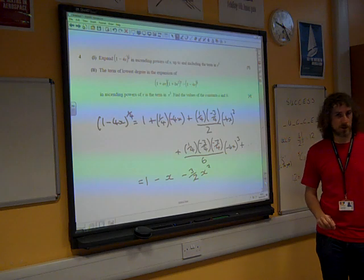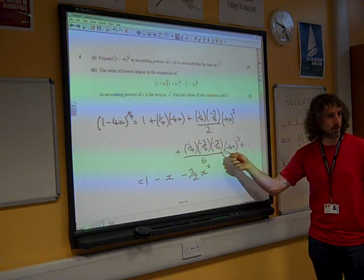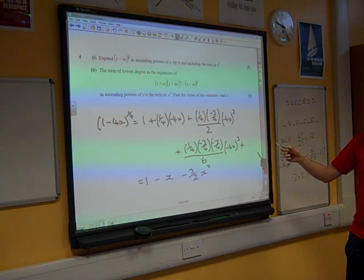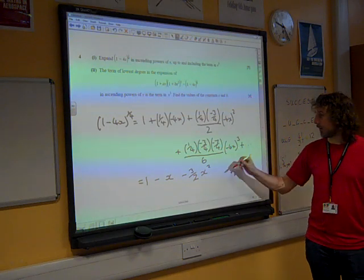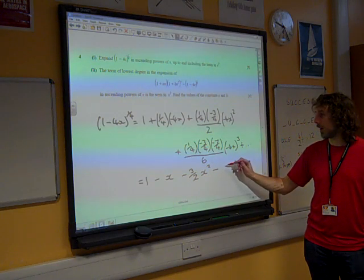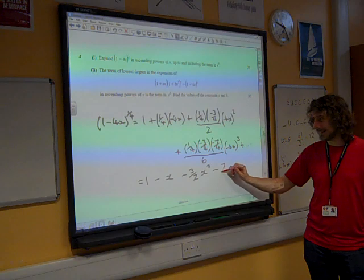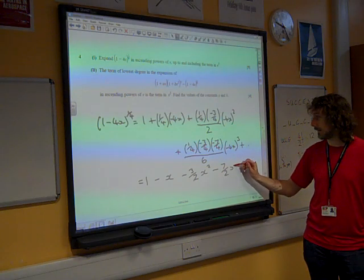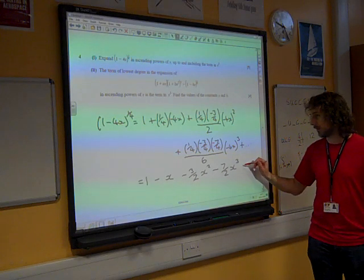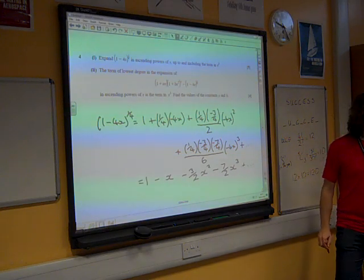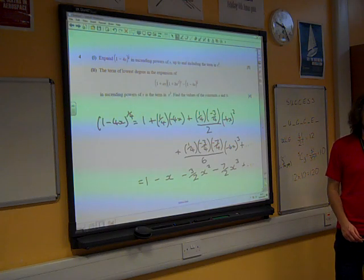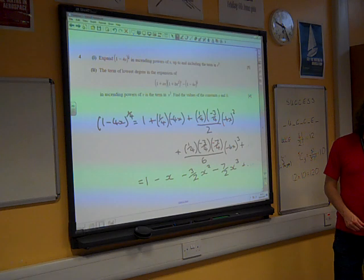We've got 4 squared on the bottom of that fraction times by the 4 squared there. So that's minus 3 over 2 x squared. And then actually the 4s are dealing with themselves here as well. We've got 4 cubed on the bottom of that fraction times 4 cubed there. That would be positive, so that would be negative again. And we've got 7 over 2 x cubed. And then the sequence will carry on. Tom thinks it's right.